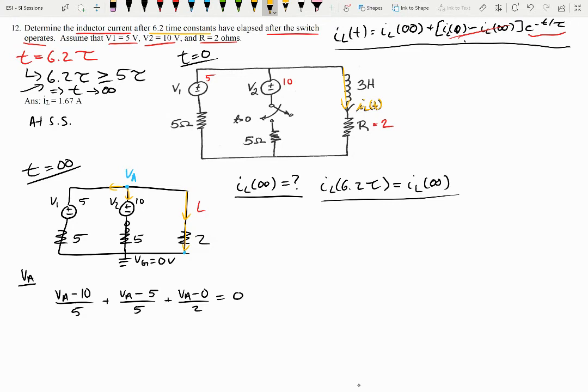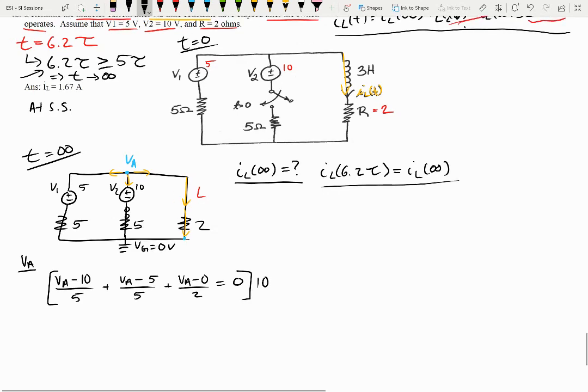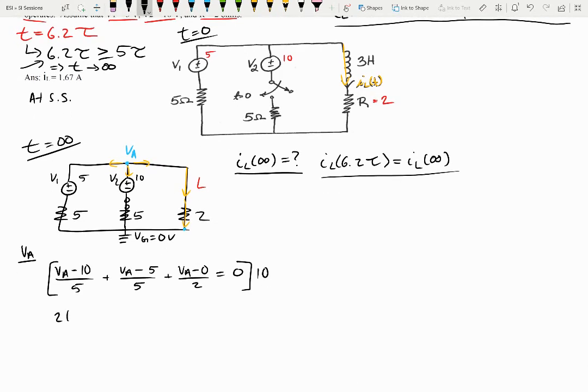So all we're doing is just a quick little nodal analysis. If we go and simplify this now, or multiply this entire thing by 10, because it's the least common, or it's a common factor that we have here, we'll get 2 V of A minus 10 plus 2 V of A minus 5 plus 5 V of A is equal to 0.